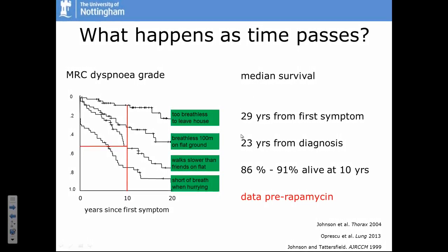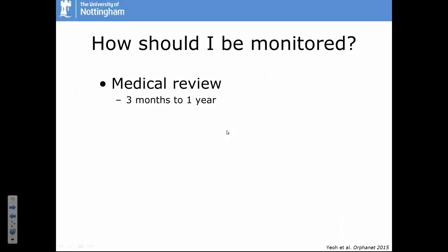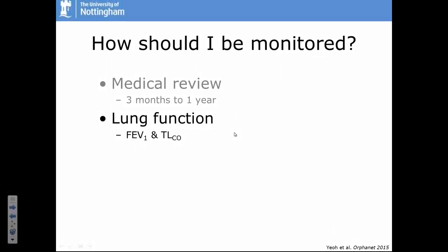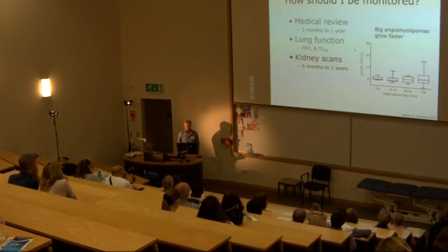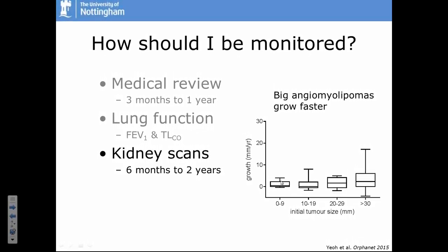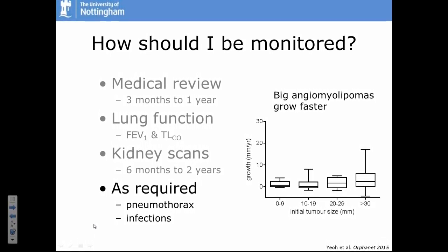How do we look after people? We see them regularly — depending on symptom level, maybe anywhere from four times a year to once a year. At those visits, you should have your lung function tested to monitor your disease. Patients with angiomyolipomas should have these scanned regularly — bigger tumours grow more than small ones, so if you have a tiny one you may only need a scan every couple of years, whereas a bigger one might need scanning every six months. If complications like pneumothorax occur, you should have treatment then.